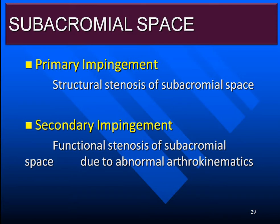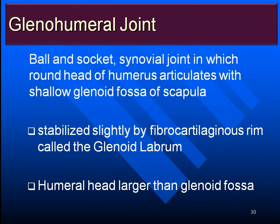The glenohumeral joint is one of the larger joints of the human body. Besides the hip joint and the small joint inside the ear, this is the third example of a ball-and-socket joint — a synovial diarthrodial joint in which the round head of the humerus articulates with the shallow glenoid fossa of the scapula. This fossa is pear-shaped and is also known as the pyriform fossa. It is very shallow and that's why the glenohumeral joint is very unstable.